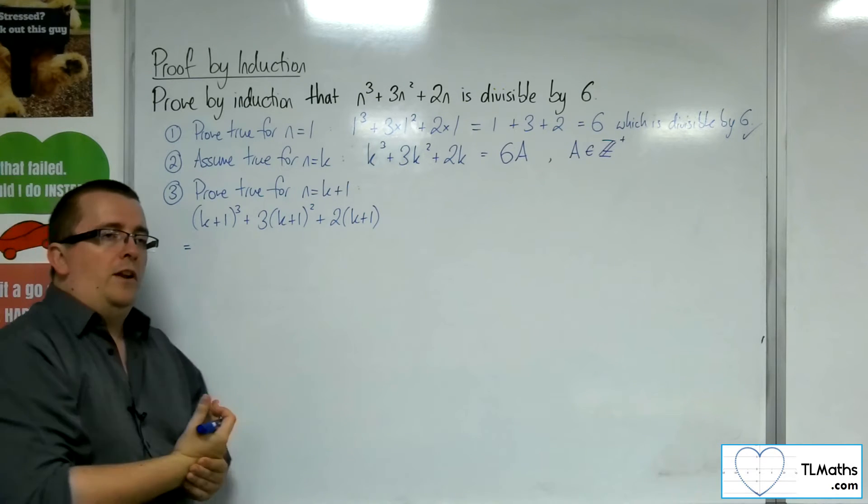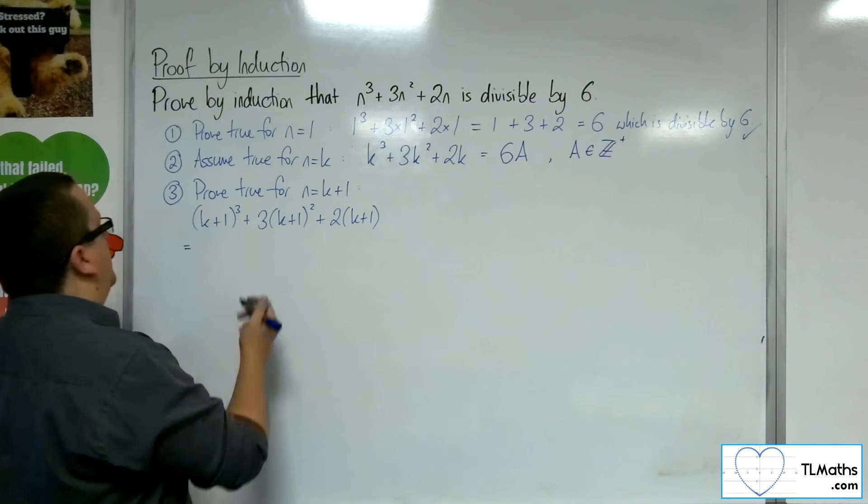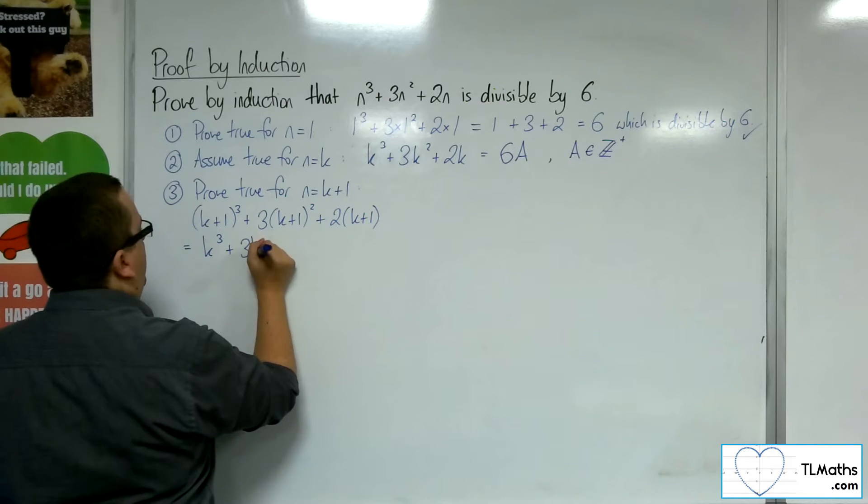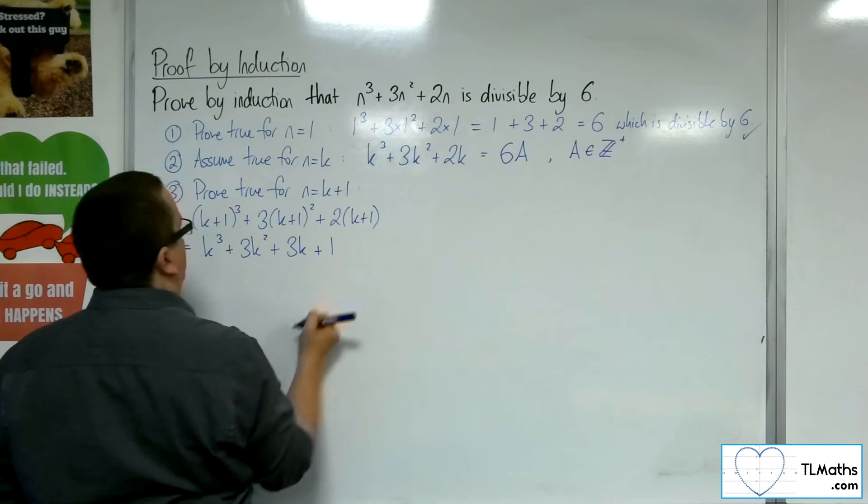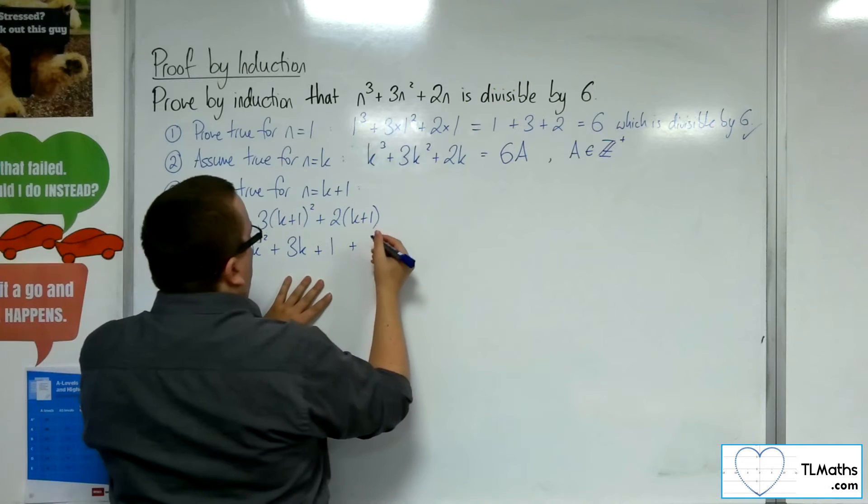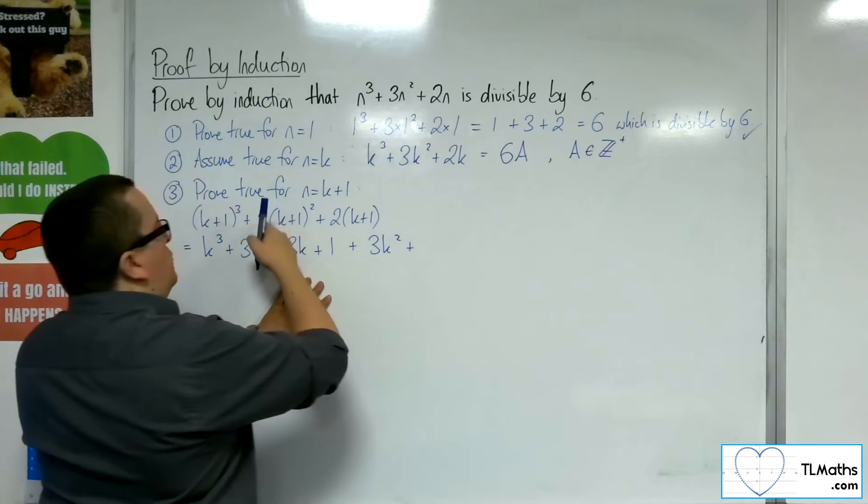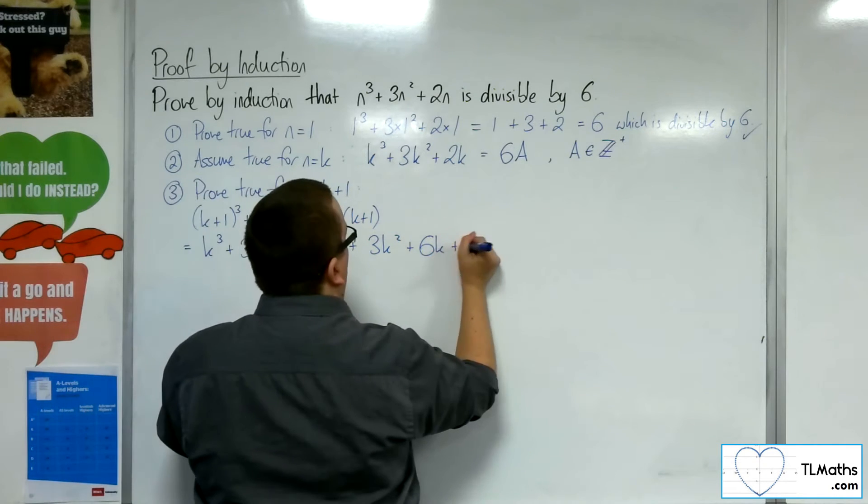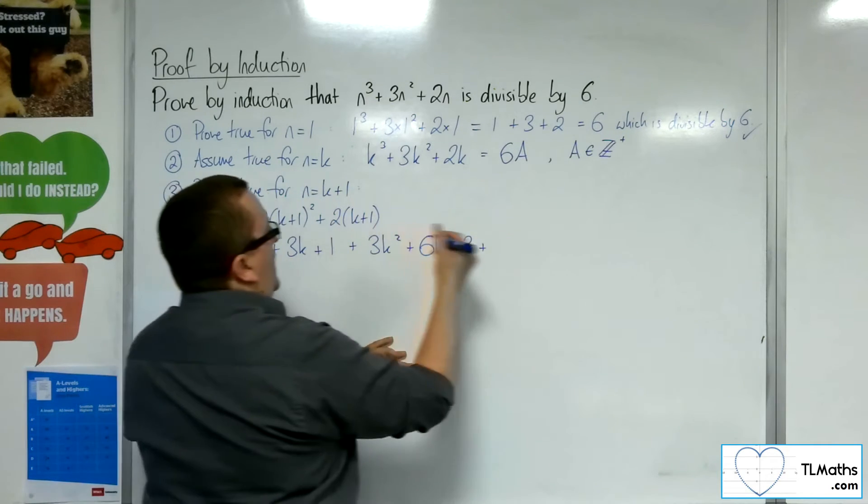A little bit of knowledge of using our binomial expansion here. So, k plus 1 cubed is k cubed plus 3k squared plus 3k plus 1. Then, we've got this 3 lots of k plus 1 squared. So, that's 3k squared plus 6k plus 3. Plus 2k plus 2.